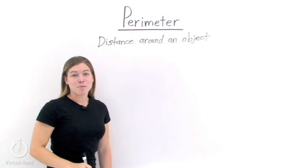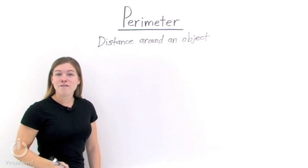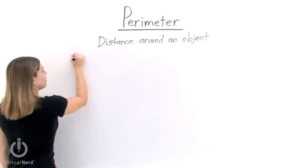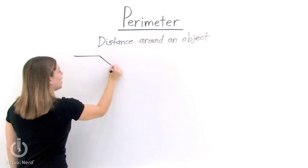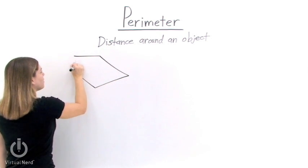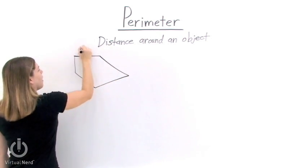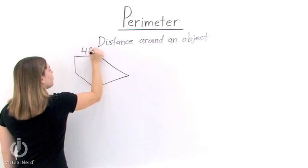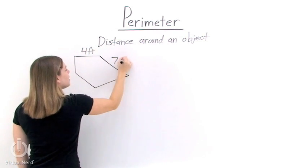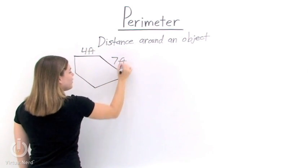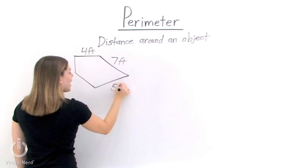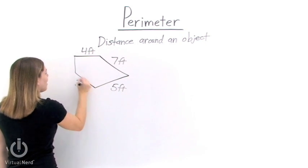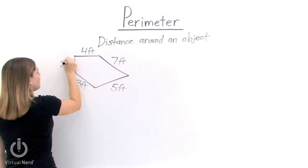So let's take a couple examples and find the perimeter. Let's draw an object that looks like this. Now we label each one of the sides. We have 4 feet, 7 feet, 5 feet, 3 feet, and 2 feet.